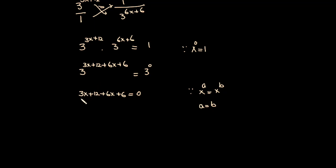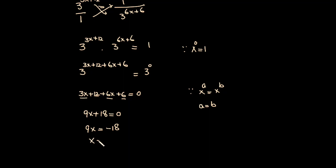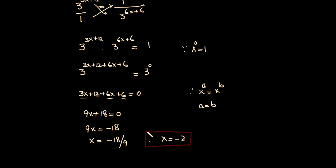So 3x plus 6x is 9x, and 12 plus 6 is 18, giving 9x plus 18 equals 0. Therefore 9x equals minus 18, and x equals minus 18 over 9. So x equals minus 2. This is my final answer. I hope you liked this video, thanks very much for watching.